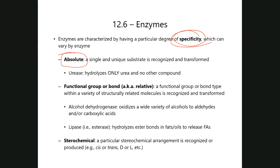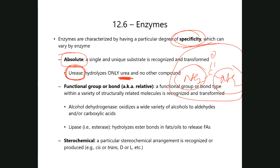For example, urease — its only substrate is urea and nothing else. It hydrolyzes urea into ammonia and CO₂. Urea contains a carbonyl bonded simultaneously to two nitrogens — like a double amide. Urea is the end product of amino acid metabolism: all the nitrogen removed by transaminases ultimately ends up on the structure of urea, which then goes into the urine. That's why urea is related to urine — the names are historically related. Urease has absolute specificity for urea.